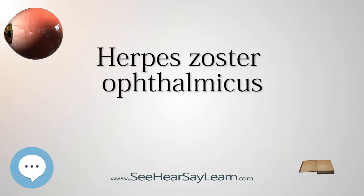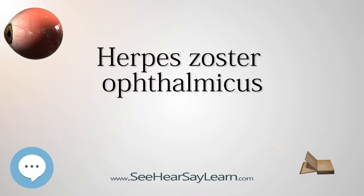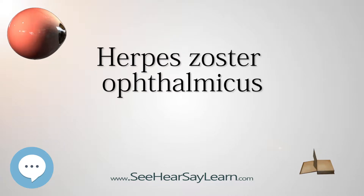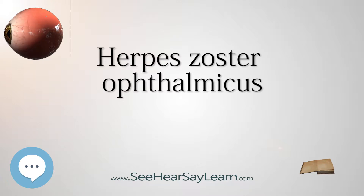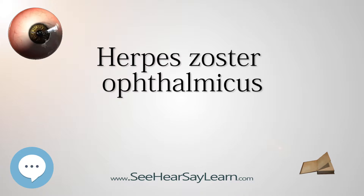Herpes Zoster Ophthalmicus, or HZO, also known as ophthalmic zoster, is a disease characterized by reactivation of dormant varicella zoster virus residing within the ophthalmic nerve — the first division of the trigeminal nerve. This condition is an important subtype of shingles, representing 15% of all cases.